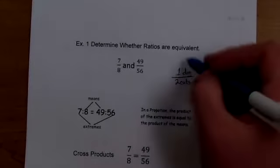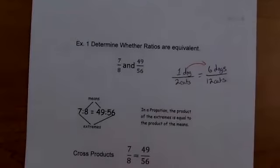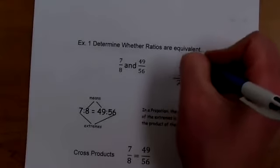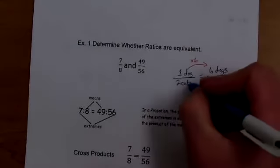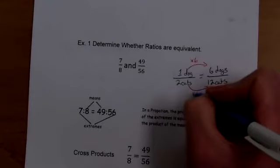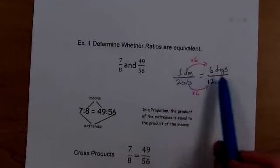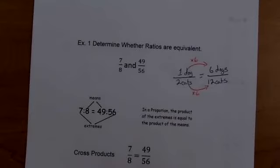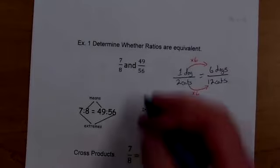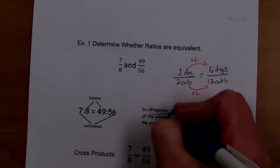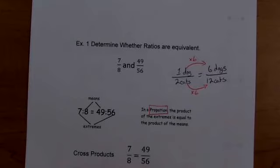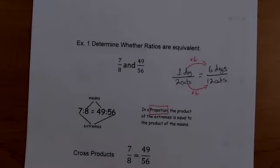Or one way to look at it, to get from one to six, I multiplied by six. So to get from two to 12, I also multiplied by six. So these are again called equivalent ratios. And equivalent ratios are what's called a proportion. So something's proportional, it means they're equivalent. They're the same.